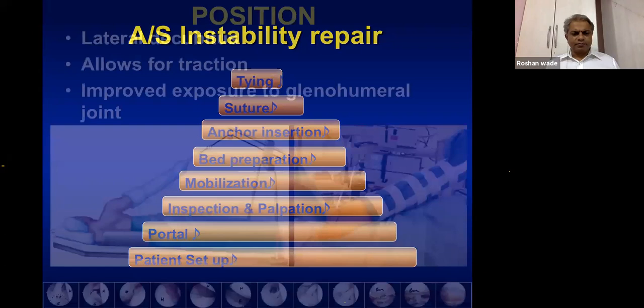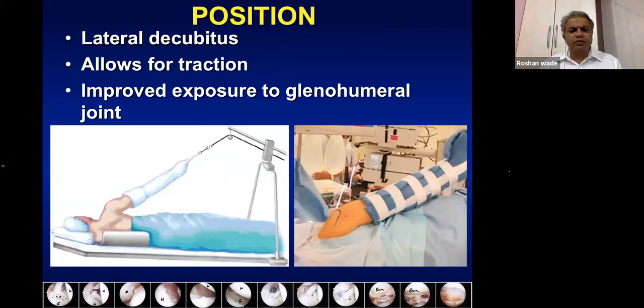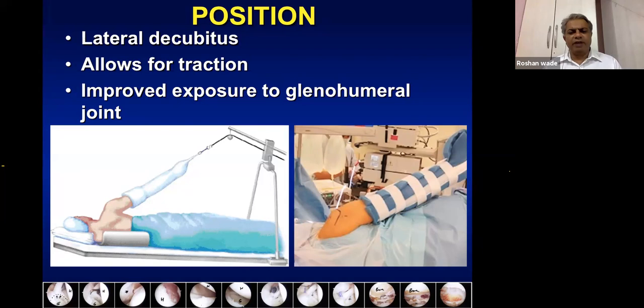The beach chair position was the initial preference for shoulder arthroscopy, but for instability cases working anteriorly becomes difficult. The lateral decubitus position is now preferred for instability cases, with beach chair used for rotator cuff cases. Lateral decubitus allows good traction, improved exposure, and complete 360-degree range of motion — allowing work anteriorly, posteriorly, inferiorly, and superiorly. It is a universal position used by more than 80% of shoulder surgeons worldwide.